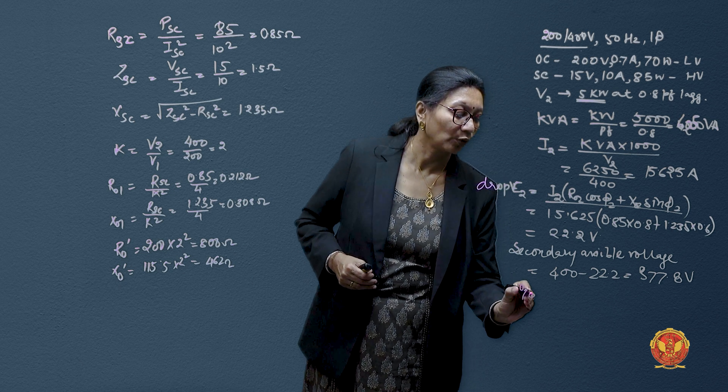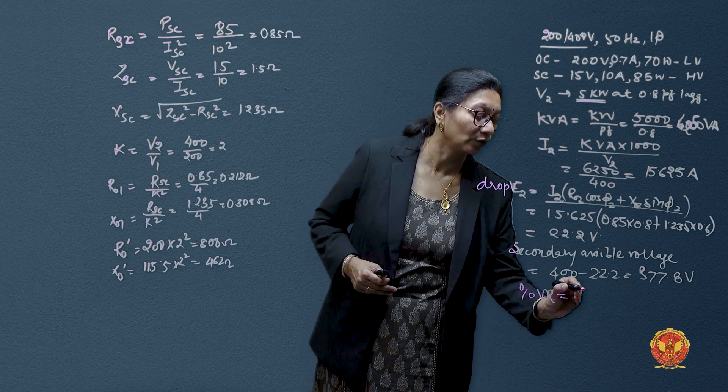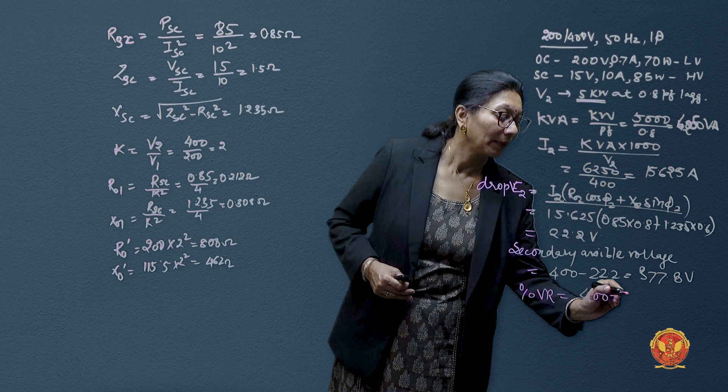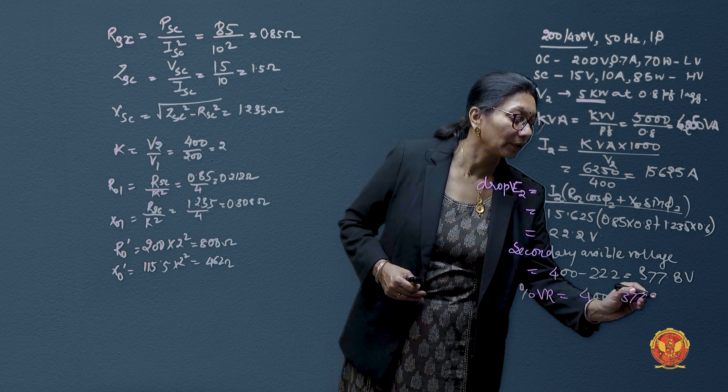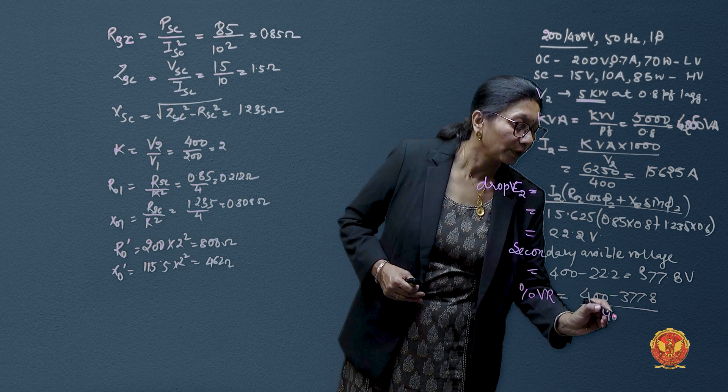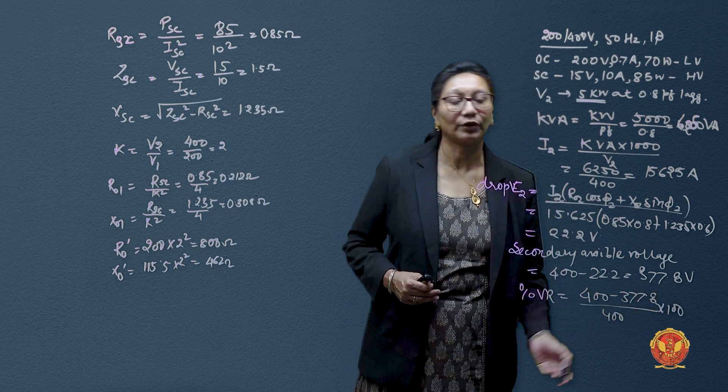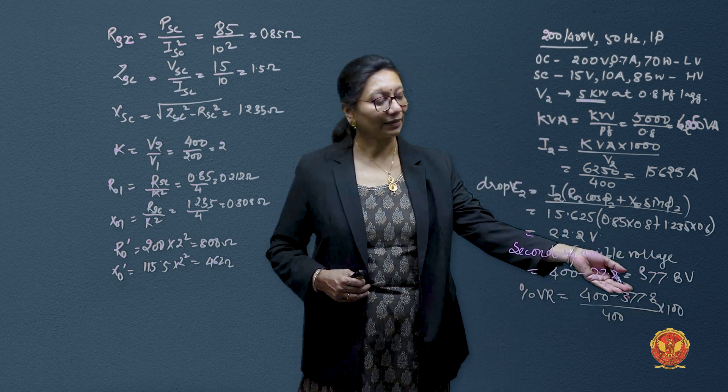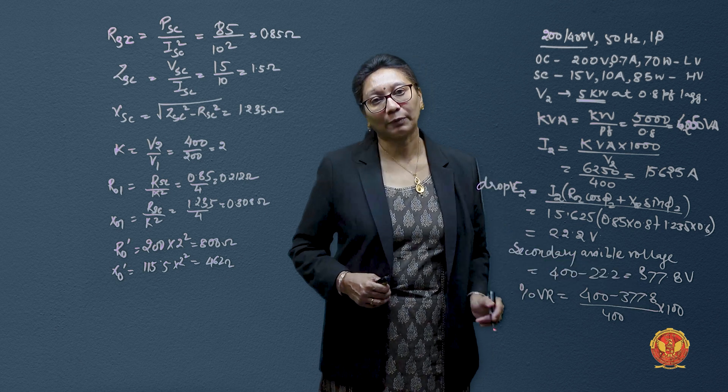If we want to calculate voltage regulation from this, then simply 400 minus 377.8 divided by 400 in percentage will give us voltage regulation which directly indicates that load is lagging at 0.8 power factor.